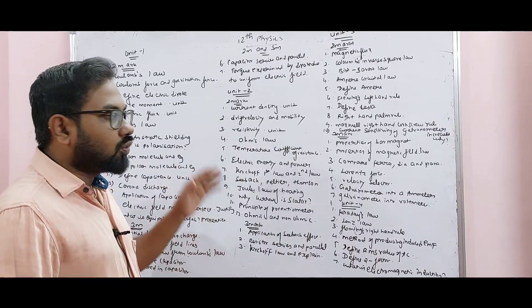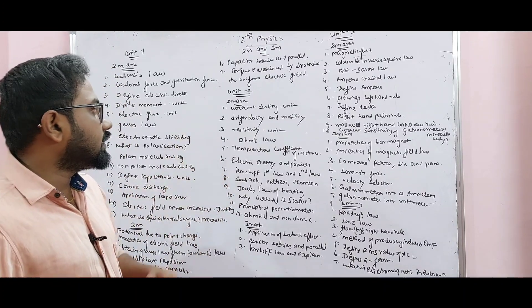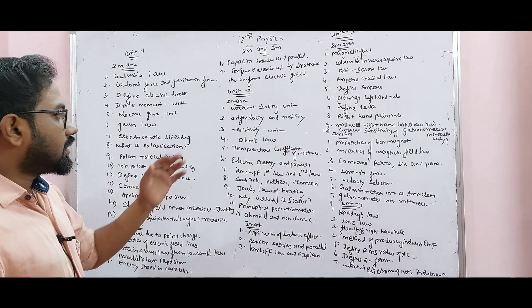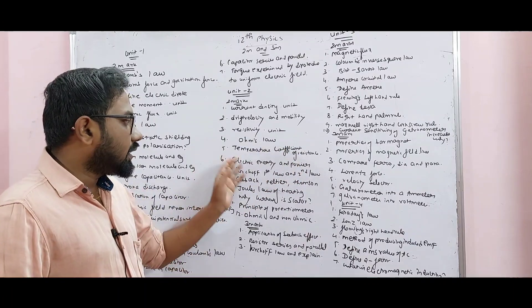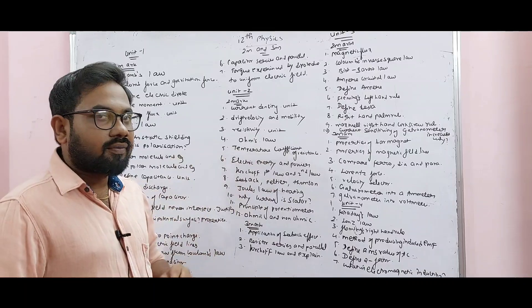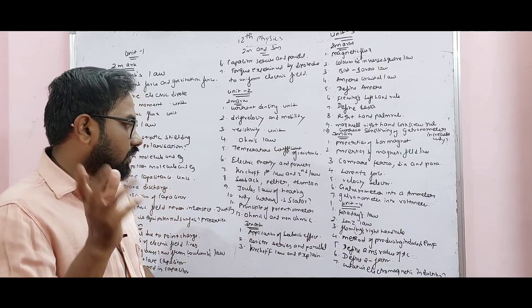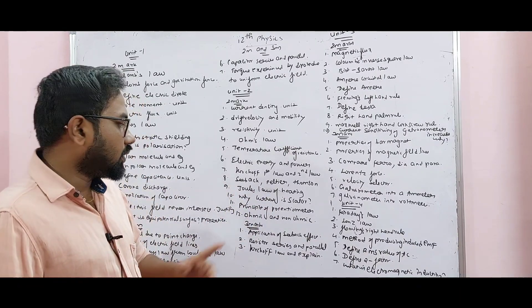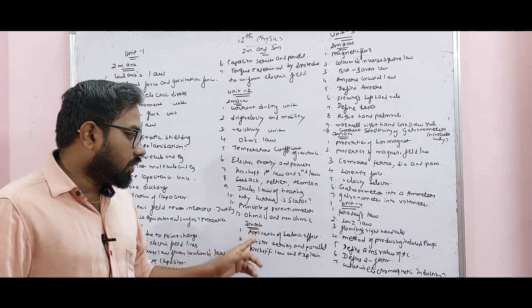Unit 2: Current density, drift velocity, mobility, resistivity, Ohm's law, temperature coefficient of resistance, electric energy and power. Kirchhoff's first law, second law — very most important. Seebeck, Peltier, and Thomson effects — three questions. Effect of Joule's heating, why current is scalar — very very important. Principle of potentiometer, ohmic and non-ohmic conductors — 3 mark.